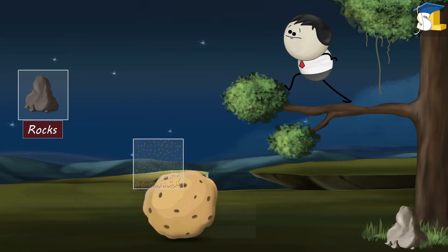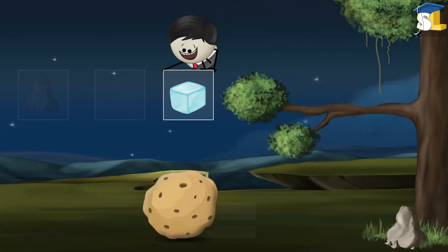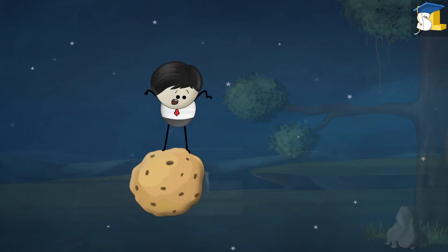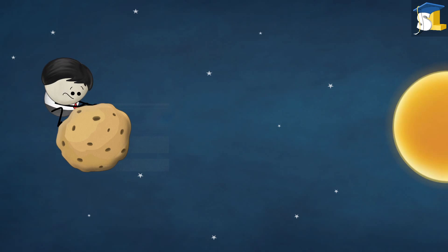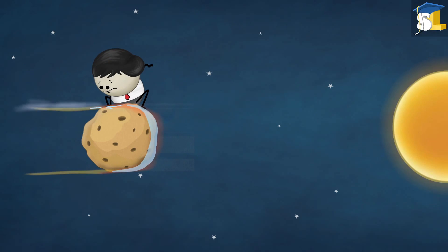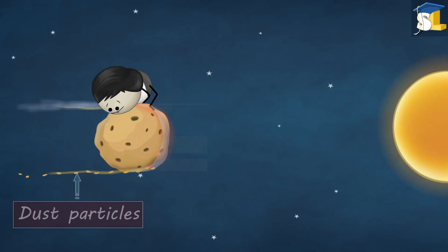A comet is a mixture of rocks, dust and ice. This ice is basically frozen water and frozen gases. When a comet approaches the sun, it starts to heat up converting ice directly into gas and releasing the trapped dust particles in space.